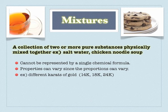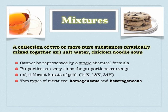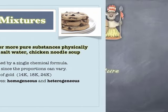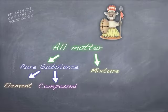For example, 24 karat gold is pure gold, but 14 karat and 18 karat gold are proportions of gold and other elements. There are two types of mixtures — homogeneous and heterogeneous — and we'll also touch on colloids a little bit.